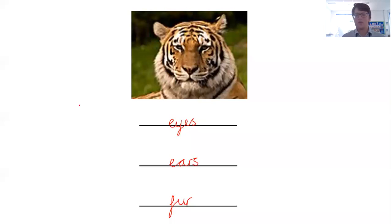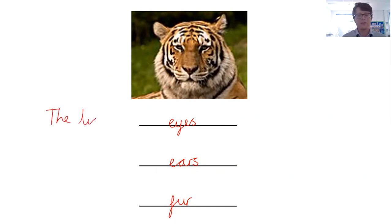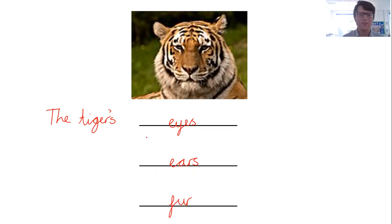Now I'm going to create three short but very descriptive sentences to describe each part. What do the eyes look like? I'm going to start my sentence with 'the tiger's' — that apostrophe to show it belongs to them — something eyes. The tiger's gleaming eyes, glistening eyes, piercing eyes, staring eyes... I quite like 'piercing' — it's that sense that it's looking into you somehow. The tiger's piercing eyes.